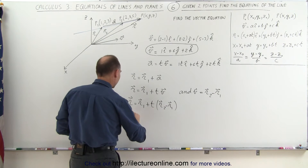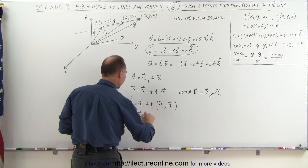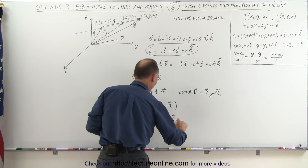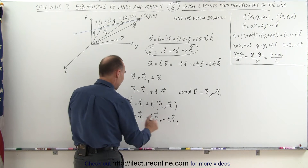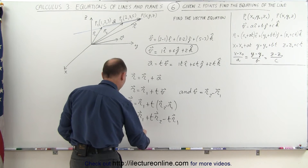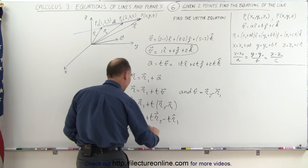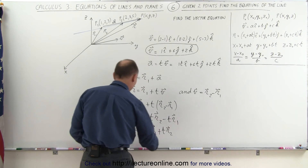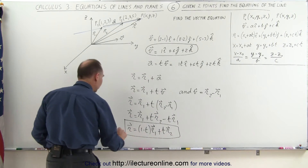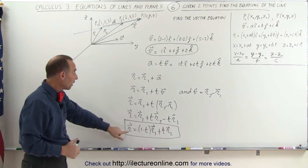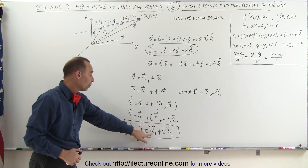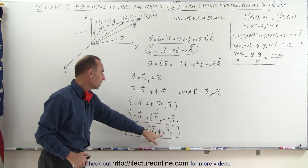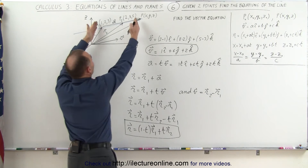Expanding and combining terms, this can be written as R equals R1 plus t times R2 minus t times R1. Combining the R1 terms, we get: R vector equals (1 minus t) times the R1 vector plus t times the R2 vector. We now have an equation that describes the line in terms of R1, R2, and the parameter t that relates the A vector to the V vector.